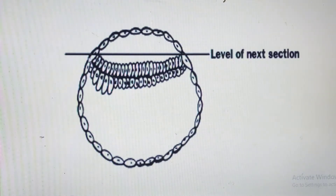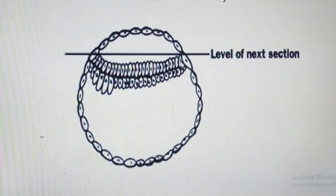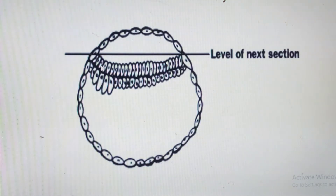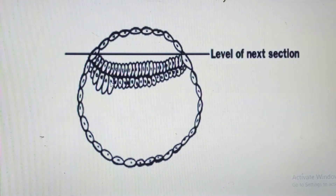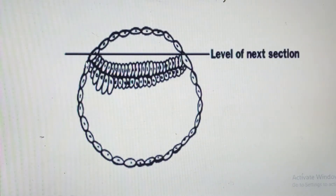Looking at the embryonic disc, in Week 2 we have columnar-shaped cells forming the epiblast and cuboidal-shaped cells below forming the hypoblast. From Week 2 to Week 3, at one end of the bilaminar embryonic disc, some hypoblast cells begin to elongate and become columnar. This elongation marks the head or cranial end of the embryo, while the opposite end becomes the caudal or tail end.